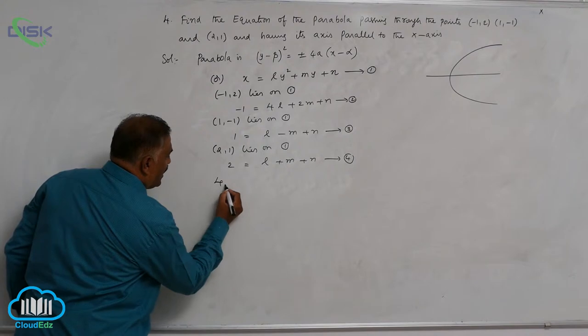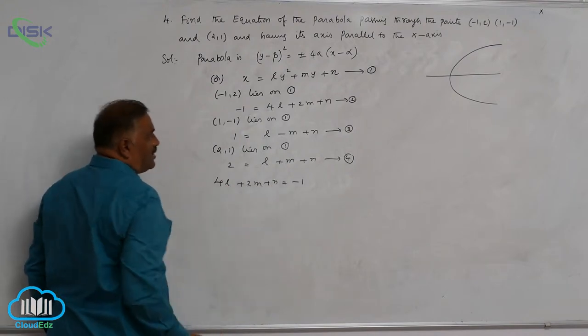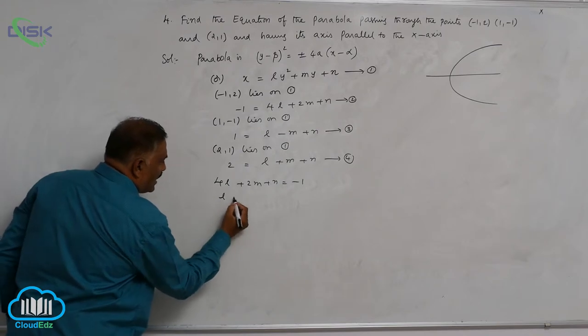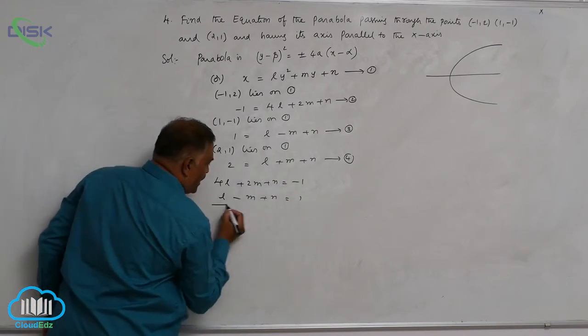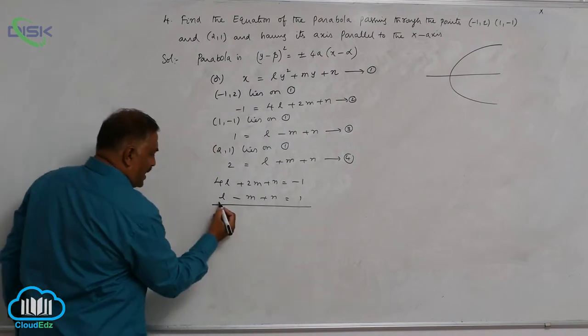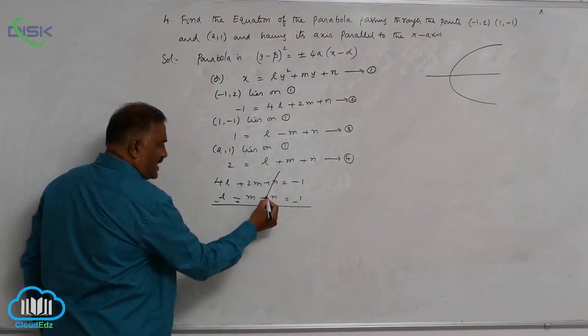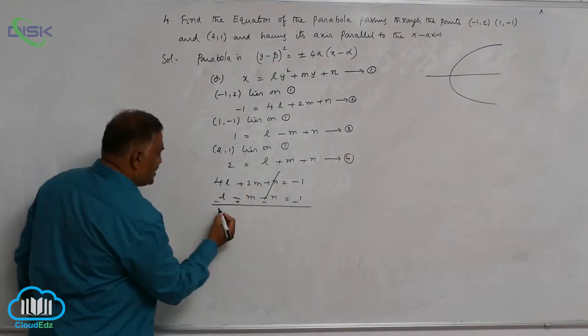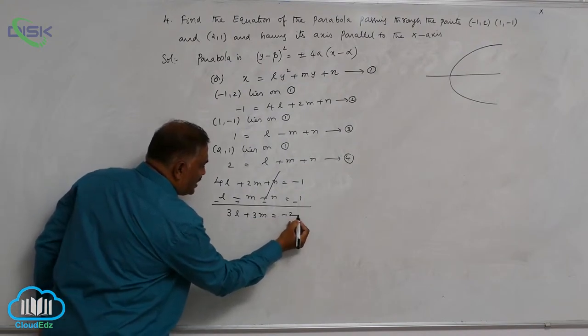So 4l + 2m + n = -1. Here it is, l - m + n = 1. Now, take subtraction: n gets cancelled here. So this is 3l + 3m = -2.